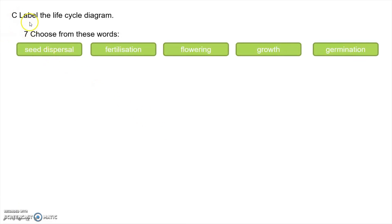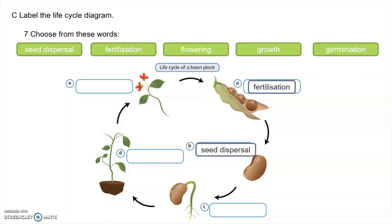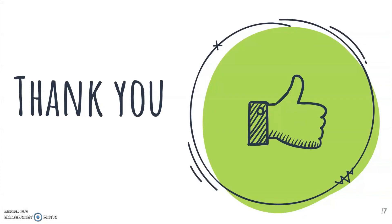Now look at the life cycle diagram of a bean plant. Using the words provided — seed dispersal, fertilization, flowering, growth, and germination — label the diagram. A is fertilization, B is seed dispersal, C is germination, D is growth, and E — when the plant has a flower — is called flowering.